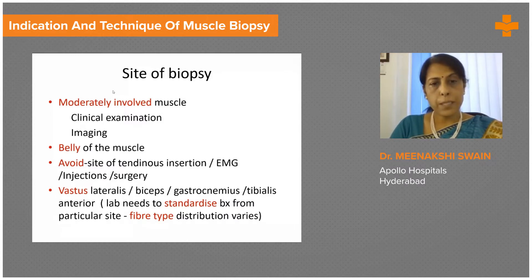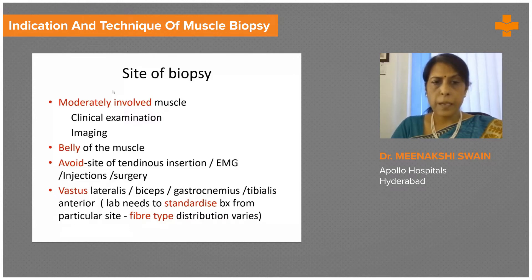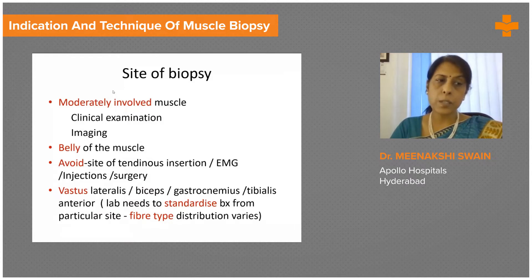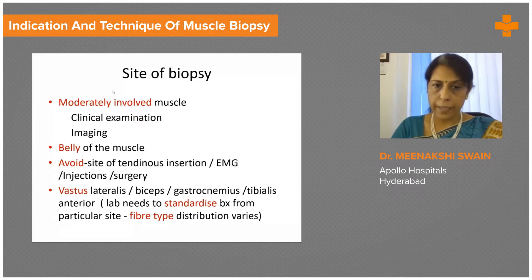The most common muscle biopsied is the vastus lateralis, but depending on the muscle group involved, a biceps, gastrocnemius, or even a tibialis anterior could be chosen. It's very important that the pathologist knows which site has been biopsied, because different muscles have different proportions of various fiber types. Unless one knows which muscle has been biopsied, a mistake in the final diagnosis can occur, and every lab needs to standardize biopsies from particular fiber sites.